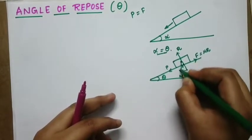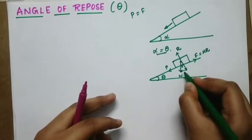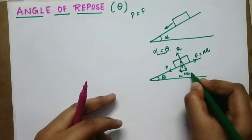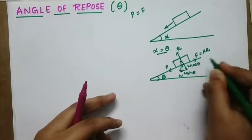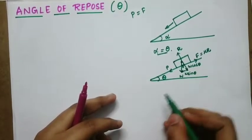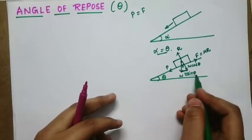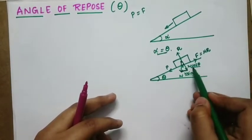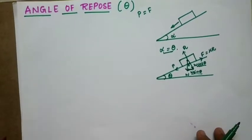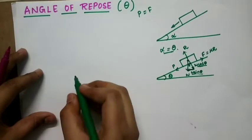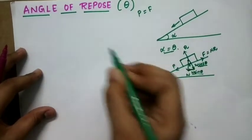If we resolve W into two components: this component is W sin theta and this component is W cos theta. We are resolving along the plane and perpendicular to the plane.